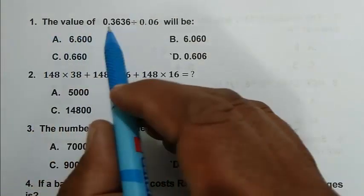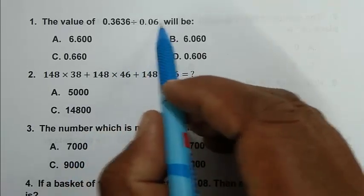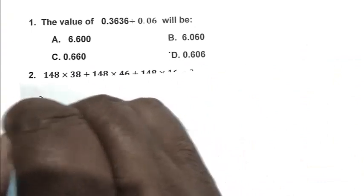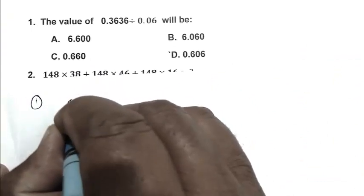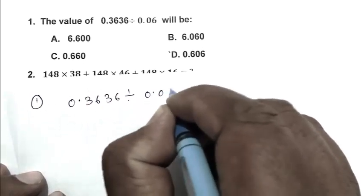Question number 1: The value of 0.3636 divided by 0.06 will be. So first we write the expression: 0.3636 divided by 0.06.